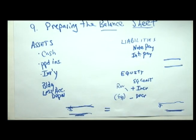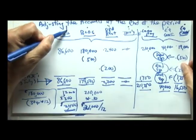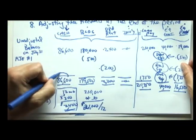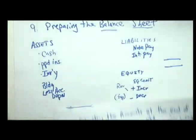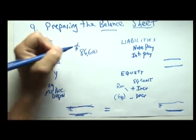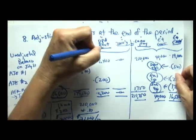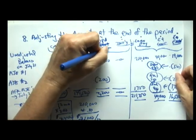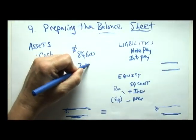Preparing the balance sheet is very easy once your database is in balance. Looking at lesson eight, the ending balance in the account cash under the asset category is eighty-six thousand six hundred, so let's put eighty-six thousand six hundred right here. Our prepaid insurance at the end of the period is twenty-two hundred, so let's add twenty-two hundred there.